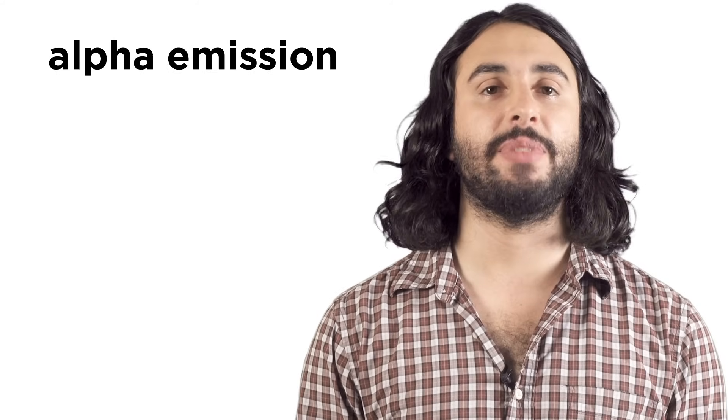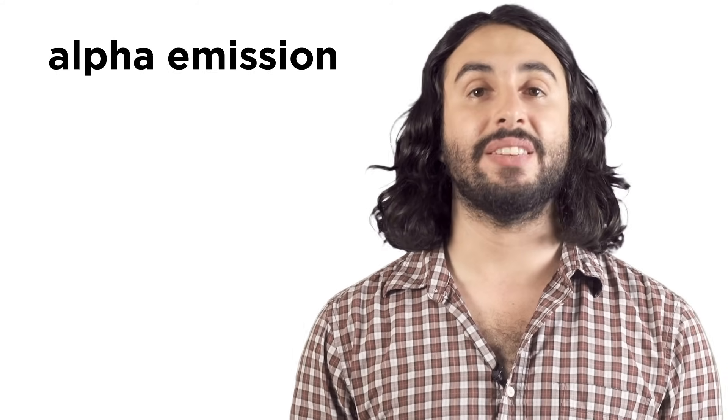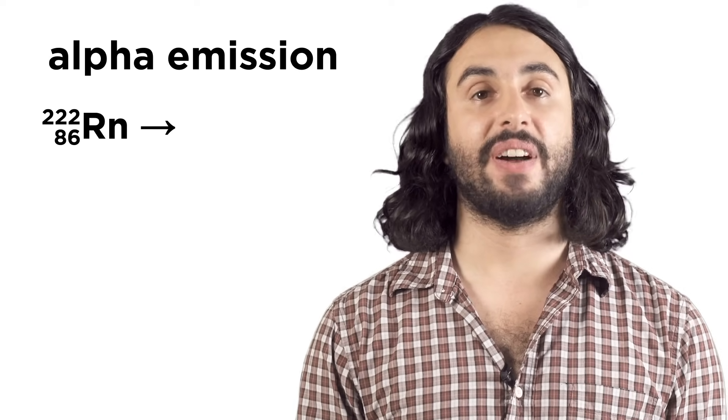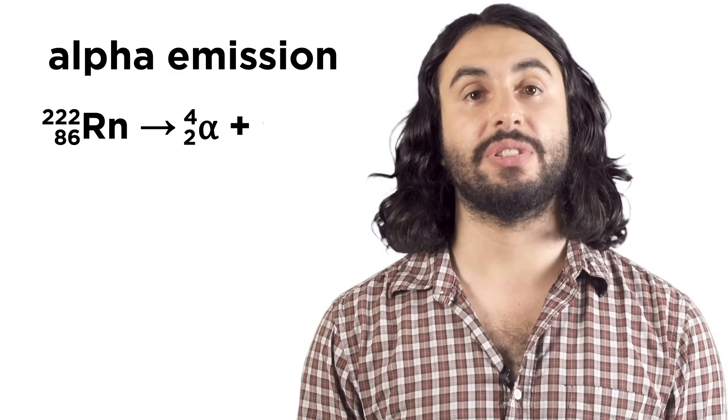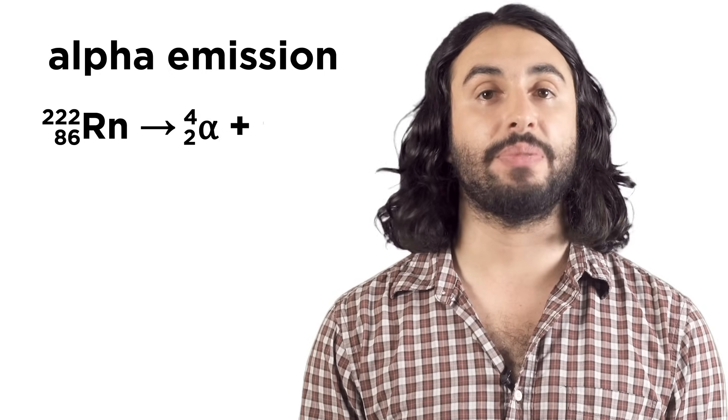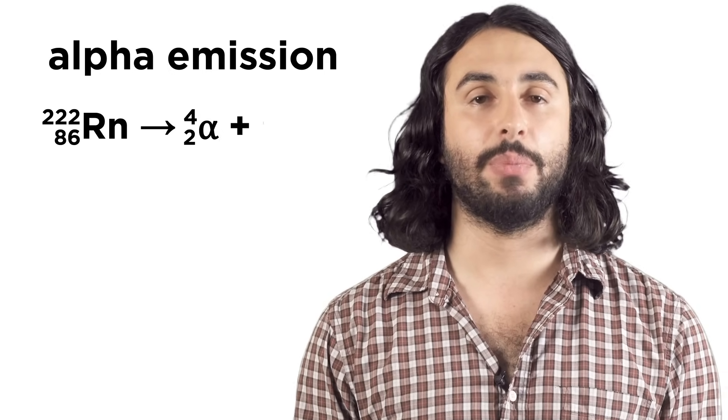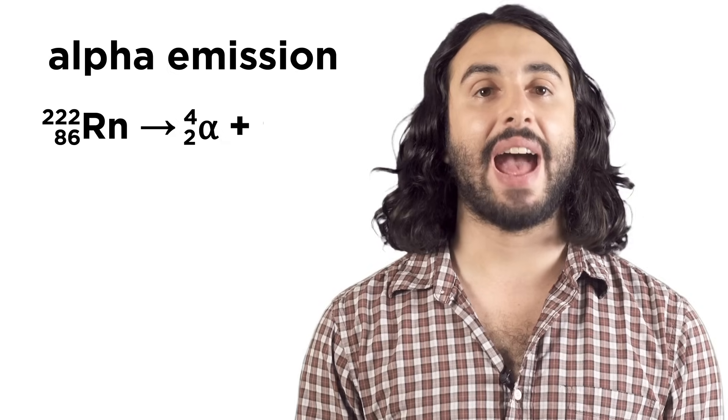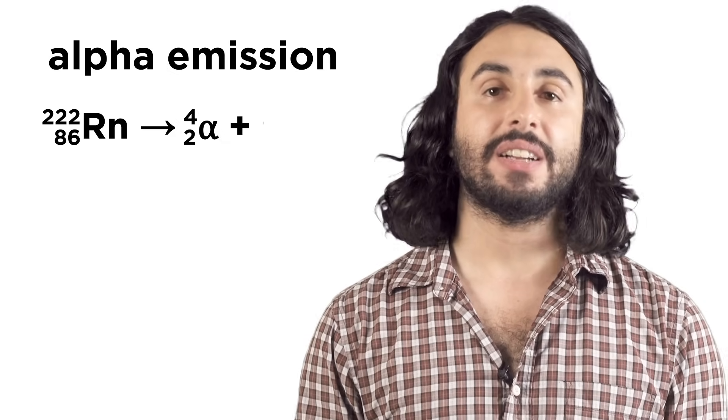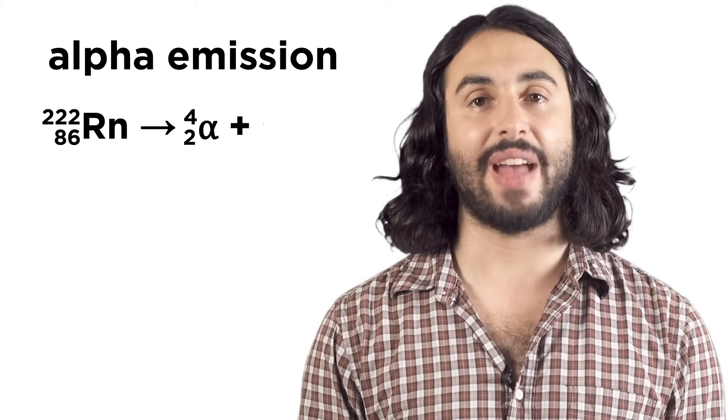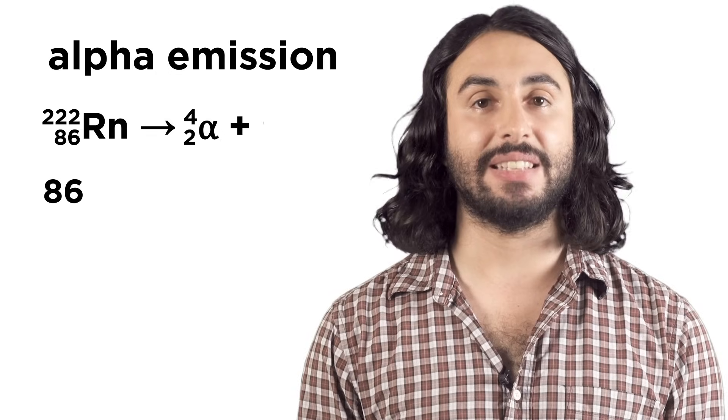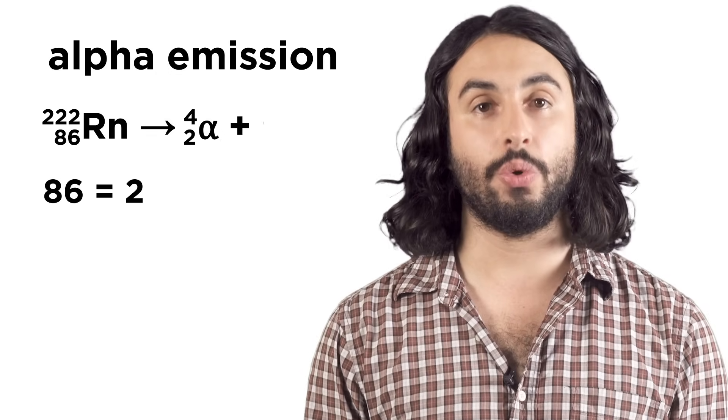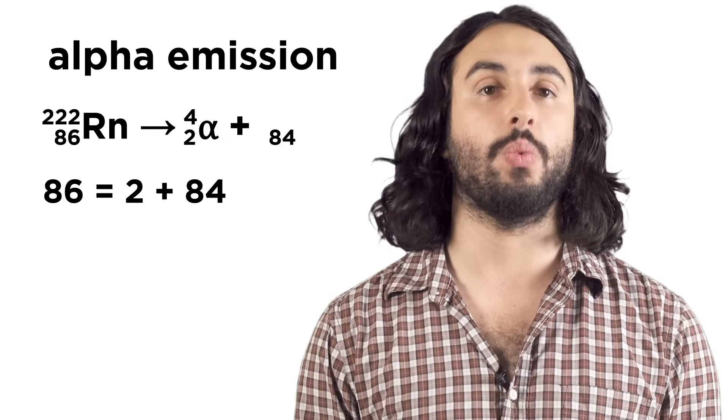So if we want to describe the emission of, say, an alpha particle, we would write it this way. Show the first particle, the arrow signifies a reaction, and then show the alpha particle. To figure out the resulting nucleus after emission, we just do some arithmetic, because the atomic numbers and mass numbers have to add up to the same number on both sides, kind of like how we need the same number of atoms on both sides of a chemical equation. If the atomic number is 86 on the left and there's a 2 on the right, we need 84 for it to work out.